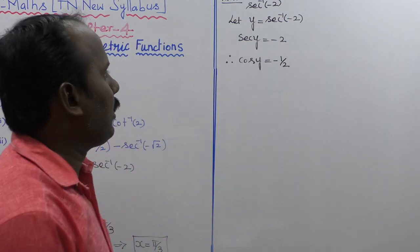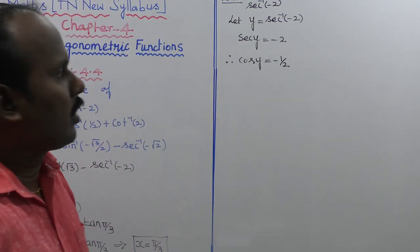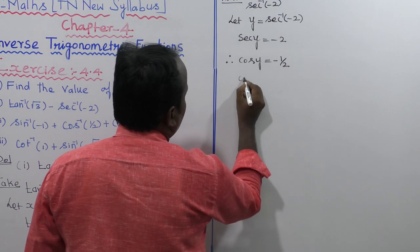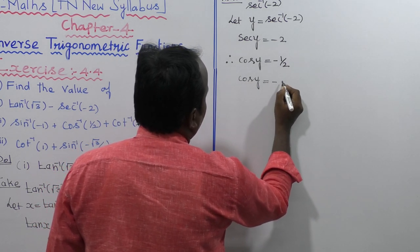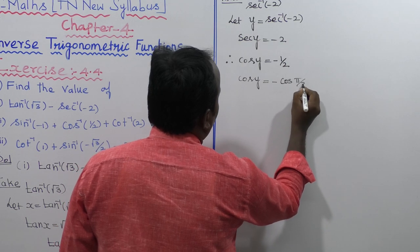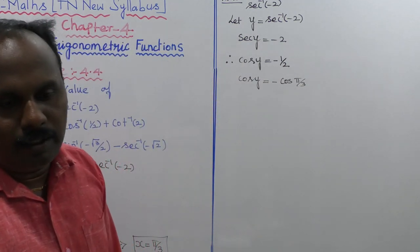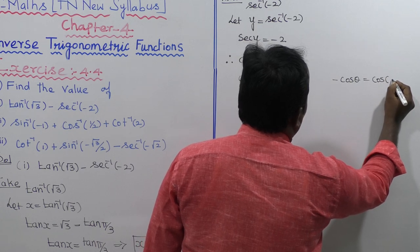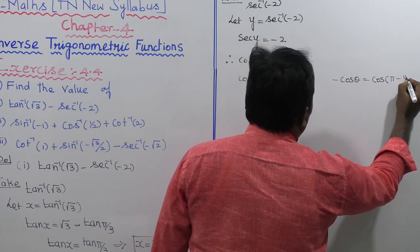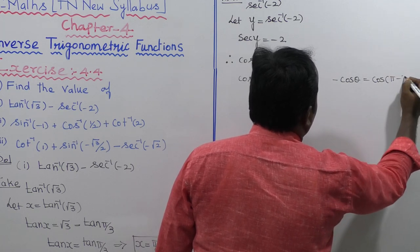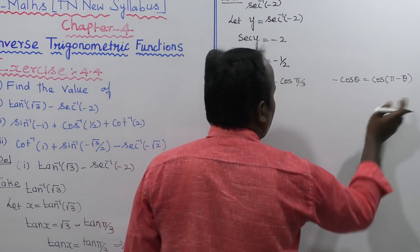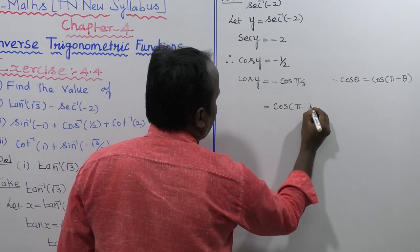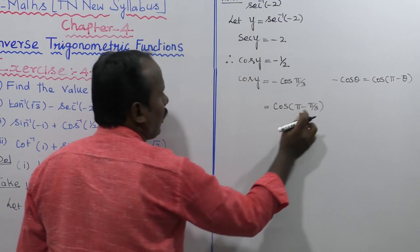Because the reciprocal of secant theta is cos, so secant y equal to minus 2 gives cos y equal to minus 1 by 2. We need to find the angle whose cosine is minus 1 by 2. Cos y equals minus half, which equals minus cos pi by 3. Applying the formula, minus cos theta equals cos of pi minus theta, with theta equal to pi by 3.